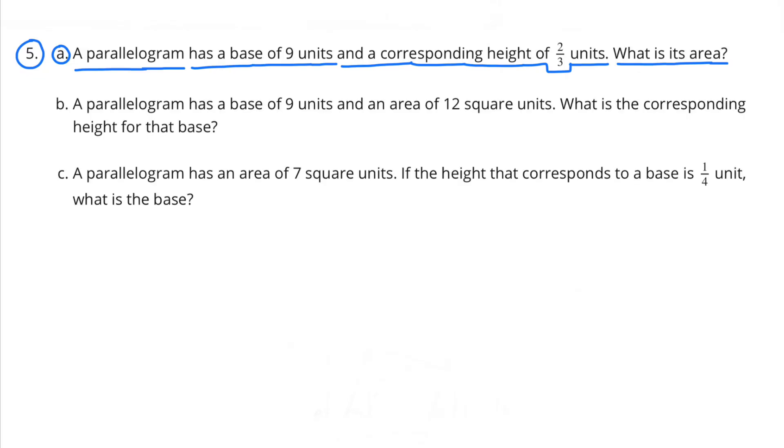Number 5a. A parallelogram has a base of nine units and a corresponding height of two-thirds units. What is its area? To figure out the area, we're just going to multiply the base times the height, or nine times two-thirds. So we can just multiply nine times two-thirds, but I have a different way to show you that I think you might find interesting.